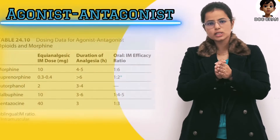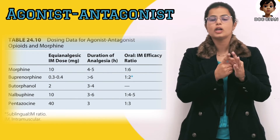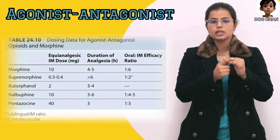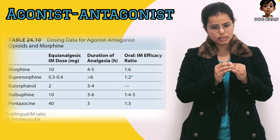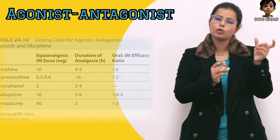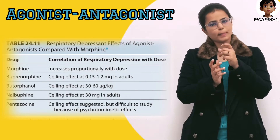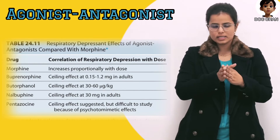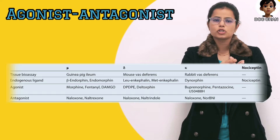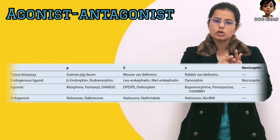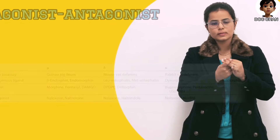Coming to agonist-antagonist: buprenorphine, butorphanol, nalmefene, and pentazocine — these are partial agonist-antagonists. Buprenorphine is a partial agonist at mu and antagonist at kappa and delta; others are vice versa. Pure antagonists are naltrexone, naloxone, methylnaltrexone, and naloxegol.